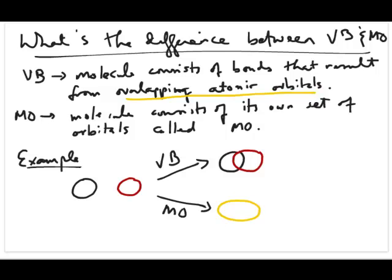The difference with the MO model, the molecular orbital model, is the molecule consists of its own set of orbitals called the molecular orbital. So in other words, there's no longer atomic orbitals in the molecule.